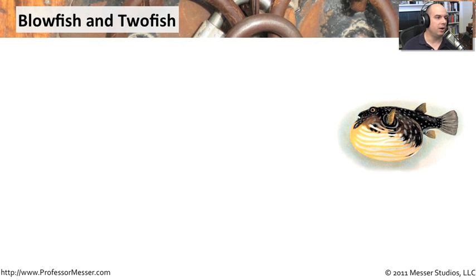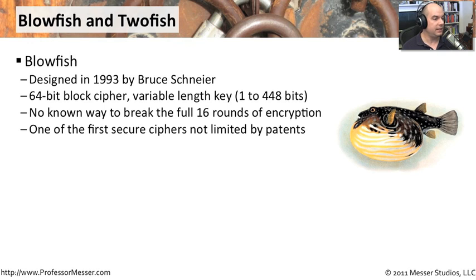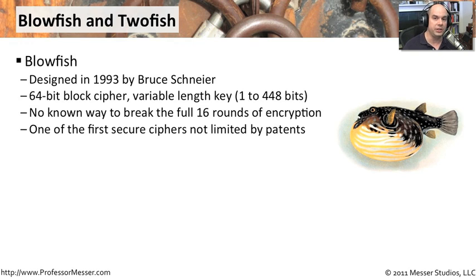Two notable symmetric key algorithms are Blowfish and 2Fish. The Blowfish algorithm was created in 1993 by Bruce Schneier. It is a 64-bit block cipher with a key size anywhere from one bit all the way up to 448 bits — very secure ciphers. Even today, there is no known way to break all 16 rounds of the encryption method used in Blowfish. What's also interesting about Blowfish is there are no patents associated with it. Bruce Schneier made it completely open to everybody, with no licensing requirements. It was one of the very first encryption methods without legalities — it's free and open, and anyone can take advantage of it.